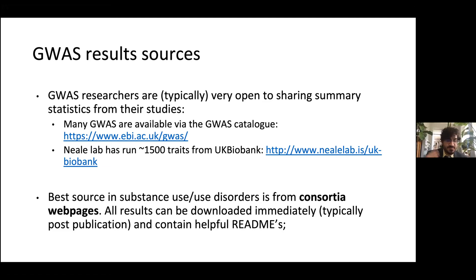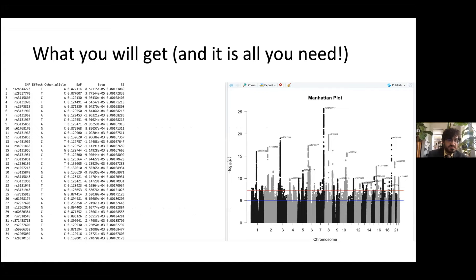An example of what a consortium web page provides: a GWAS of executive functioning that gives you a file easily uploaded into R, including SNP ID, effect allele, minor allele frequency, beta, standard error, chromosome, and base position. That's essentially all you get — a simple data frame of association statistics. The chromosome and base position are needed for tools like MAGMA.